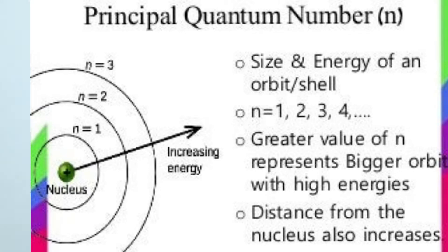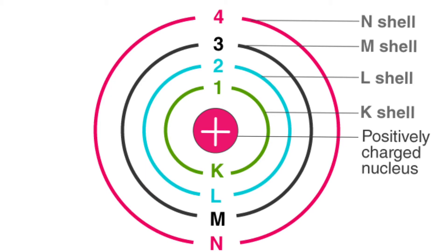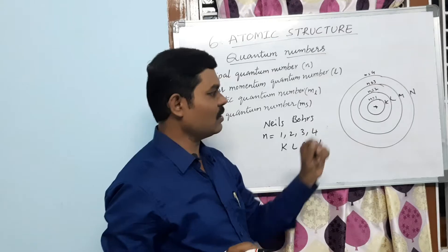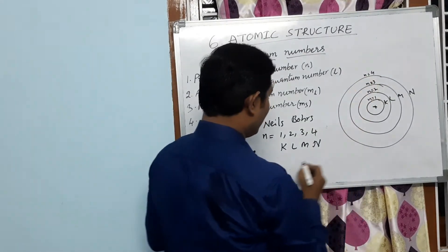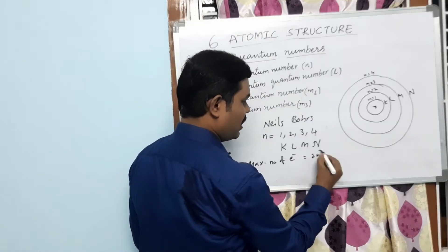This quantum number explains about the size and energy of the main shells. In an atom, electrons revolve around the nucleus in particular shells. The first shell is n=1, the second is n=2, the third is n=3, and the fourth shell is n=4. These represent the K, L, M, and N shells. By using the principal quantum number, we can also find the maximum number of electrons present in each shell using the formula 2n².